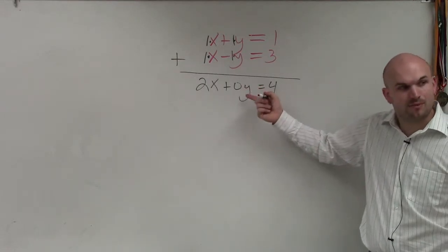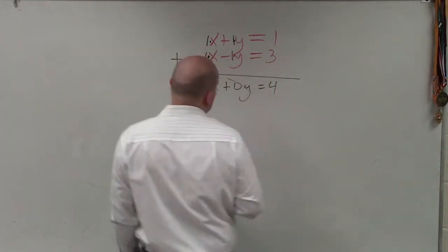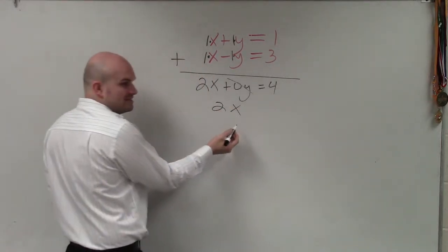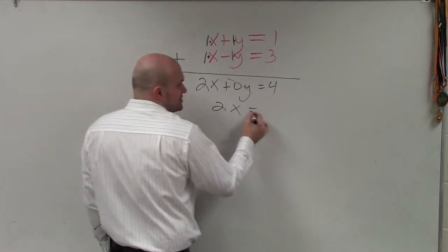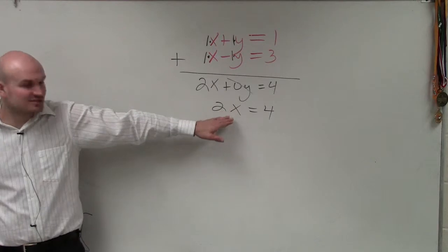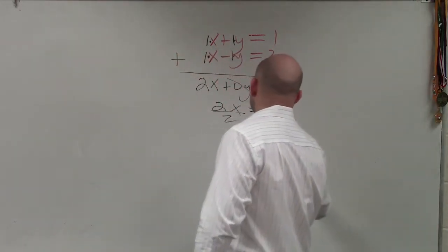And then what is 0 times y? Zero. So a lot of students say it cancels out. There's really nothing that cancels out. It just goes to 0. And 2x plus 0 is just going to be written as 2x. So now I can solve for x, which I divide by 2, divide by 2, x equals 2.